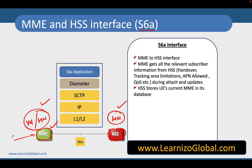So whenever a user is trying to access a particular network, the MME has to take approval from the HSS, and that approval is taken care of by the S6a interface. So MME talks to HSS and finds out everything about the user by using the S6a interface.